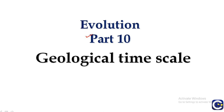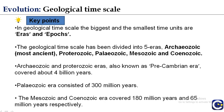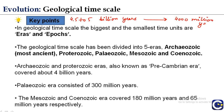Hello everyone, we are starting Part 10 of the Evolution chapter of Class 12 CBSE. Today we are covering the geological time scale. The age of the earth is estimated at around 4.5 to 5 billion years, and the first life on earth appeared in water about 4,000 million years ago. From this first appearance of life till today, there have been the origin of many different species, plants, and animals.